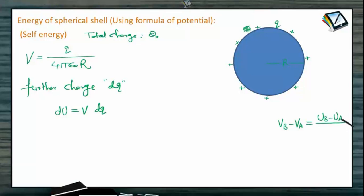Means if we move a unit positive charge from the point A to B then whatever amount of energy change is there that is the potential difference between these two points. That means by multiplying the charge with the potential difference we can always find the change in energy. So here V is the potential,